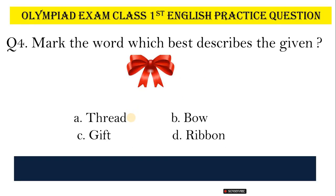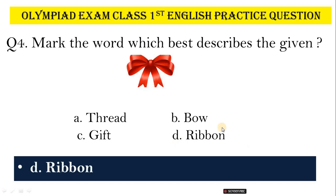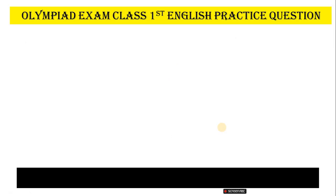Question No. 4. Mark the word which best describes the given image. Options: A, Thread; B, Bow; C, Gift; D, Ribbon. Correct answer is Option B, Ribbon.